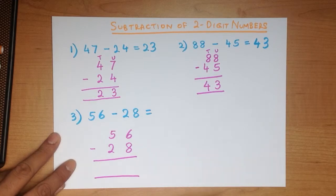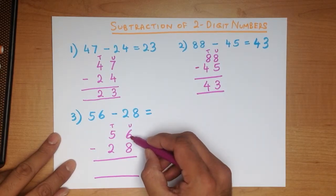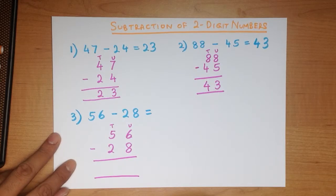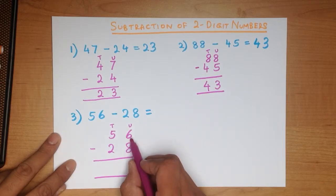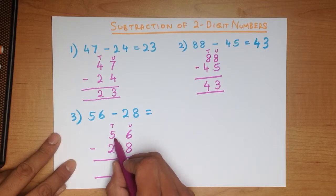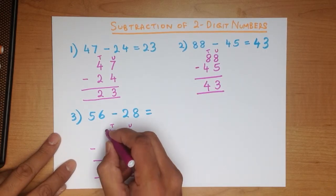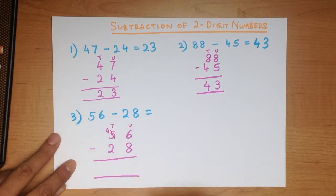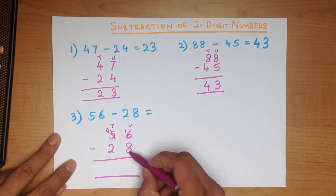Nice big equal sign. We can label these again — units and tens. We start with the column on the right-hand side. What is 6 minus 8? Well, the number 8 is larger than the number 6, so we can't do it this way. What we have to do is take a 10 from the 5. We put a cross next to the 5, count down 1 — so 5 minus 1 is 4 — and we put the 1 here. We've taken a 10 from the tens column and added it to the units, because 6 is smaller than 8.